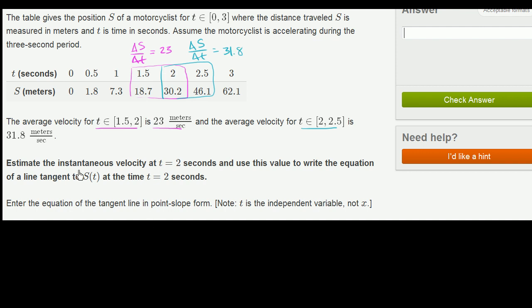And then they say, estimate the instantaneous velocity at t equals 2 seconds, and use this value to write the equation of a line tangent to s(t) at the time t equals 2 seconds.